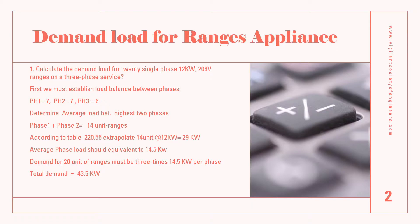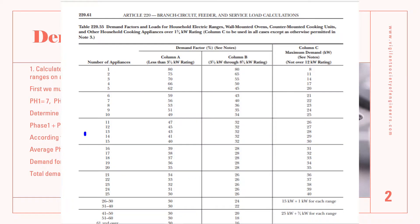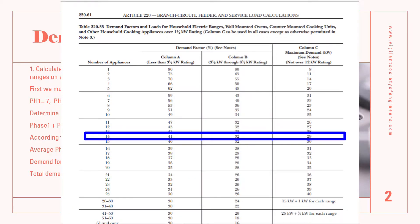Next, we find the average between two phases for the kilowatt value required. Phase one and two would have those two values, so in total we have 14 units of ranges. If we go to Table 220.55, we can extrapolate a value for 14 units at 12 kilowatt.